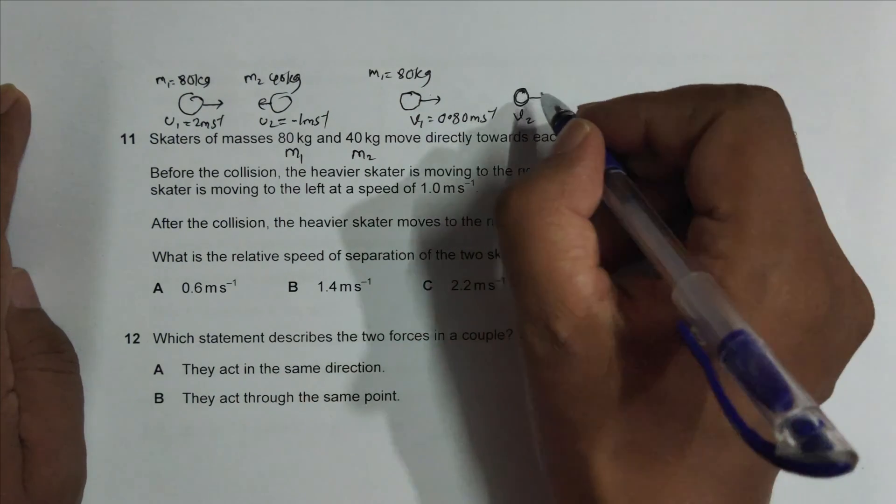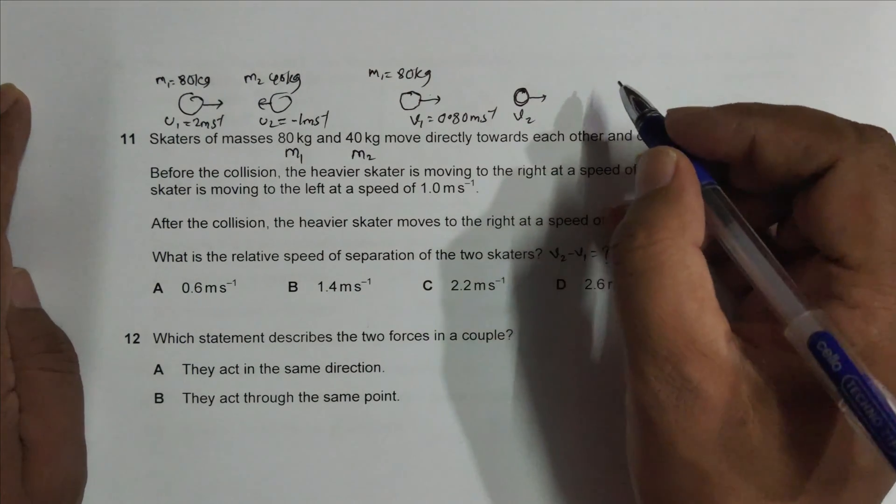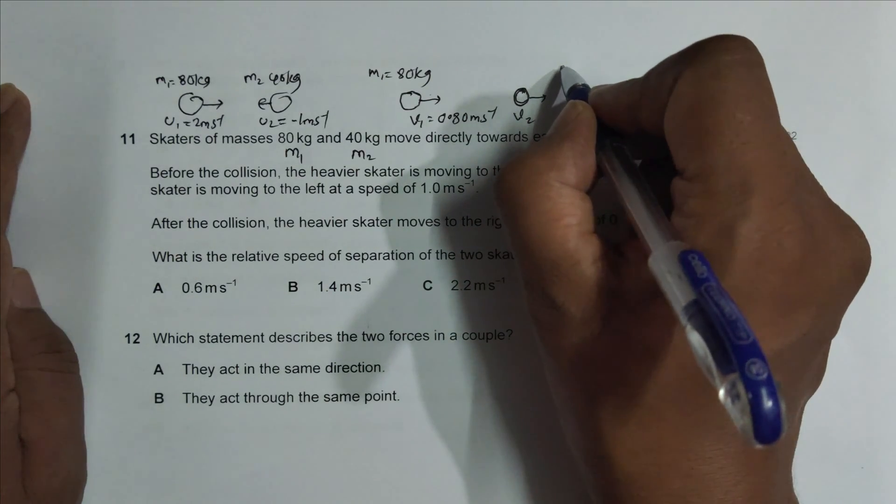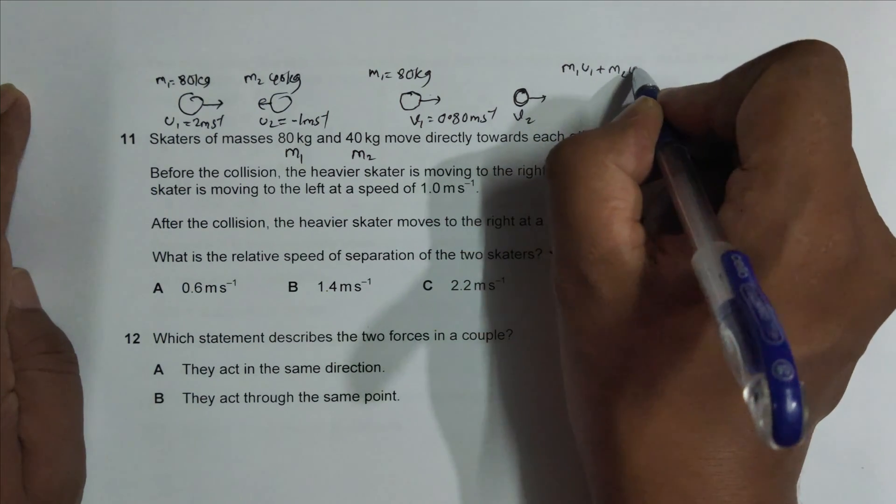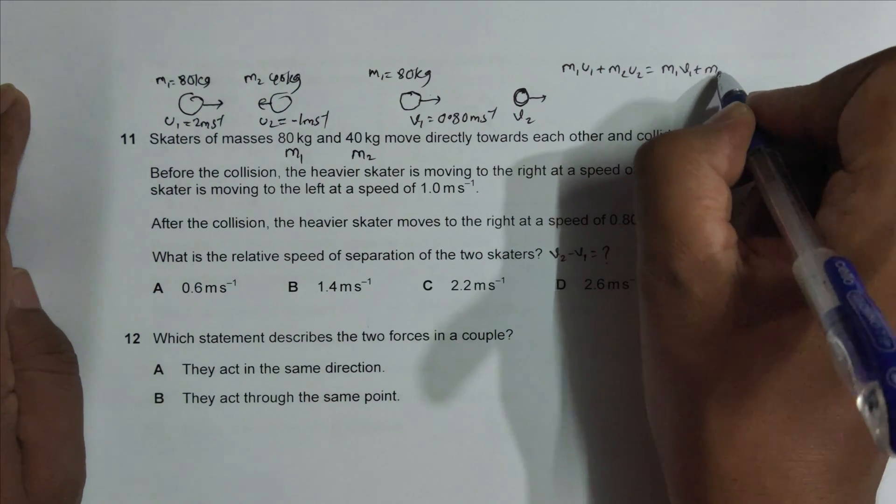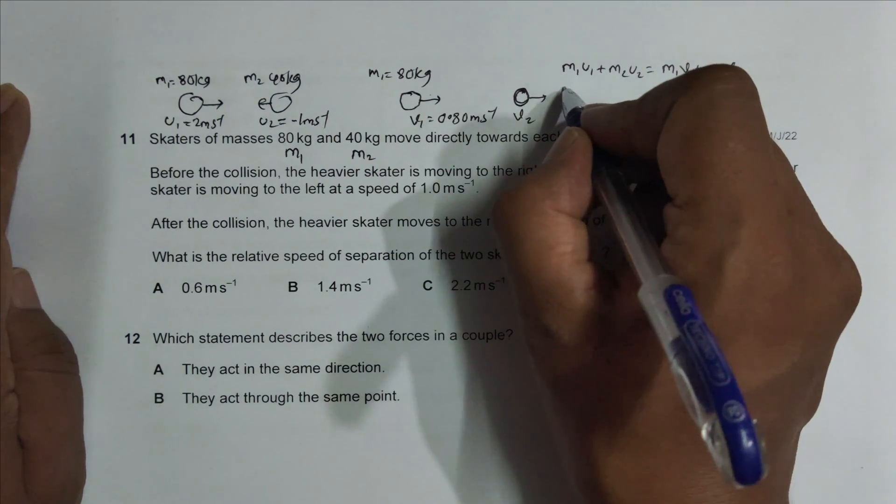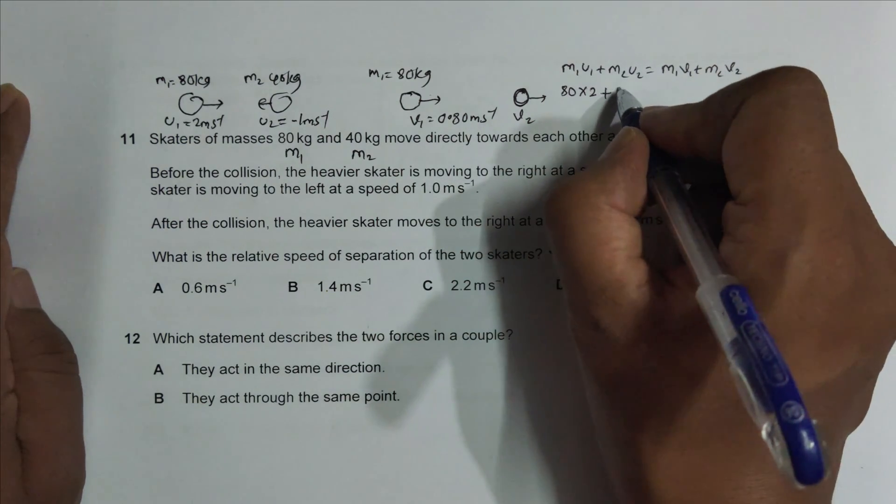So we have to find v2. It requires the application of principle of conservation of momentum. So we must have m1 u1 plus m2 u2 is equal to m1 v1 plus m2 v2, which gives me 80 into 2 plus 40